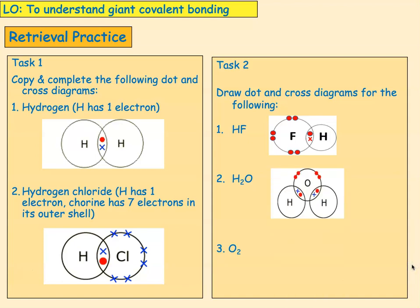H₂O: oxygen has got six in its outer shell, hydrogens have one each. In order for oxygen to get a full outer shell of eight, it needs to share one electron with one hydrogen and another electron with another hydrogen. Then oxygen has got eight in its outer shell if you count as you go around, and each of the hydrogens has got two. So two single covalent bonds, H₂O.